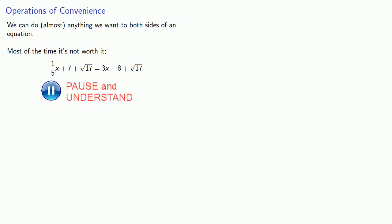While we can apply the preceding method to any linear equations, sometimes it's convenient to perform some operations first. And this emerges from the following idea. We can do almost anything we want to both sides of the equation. Most of the time, it's not worth it. So if I have this perfectly tame equation, 1 fifth x plus 7 equals 3x minus 8, I could, if I wanted to, add square root of 17 to both sides. I'm not sure why I'd want to do that, so let's not.